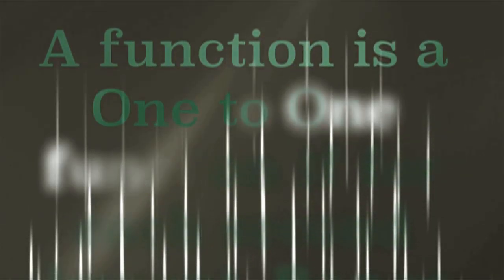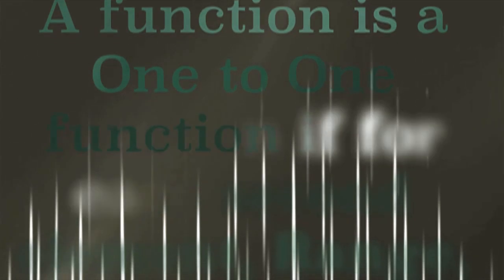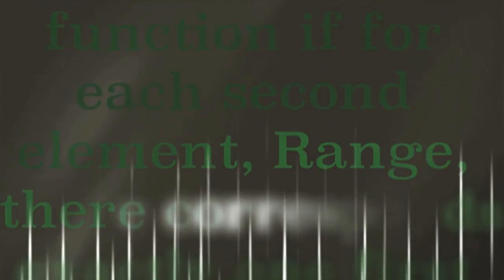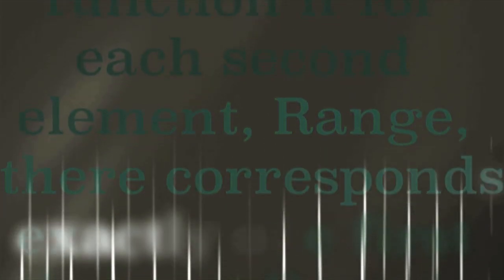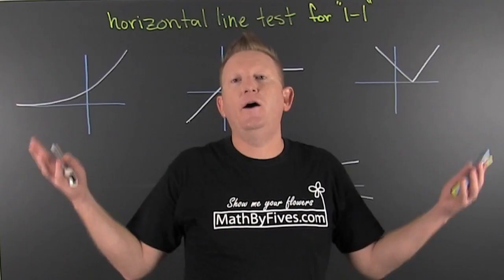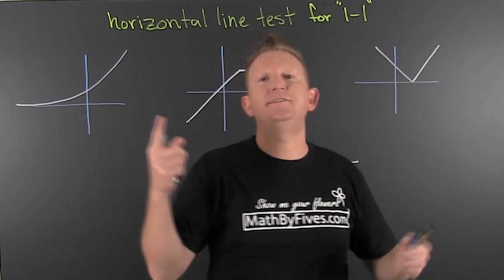A function is a one-to-one function if, for each second element — the range — there corresponds exactly one first element — the domain.